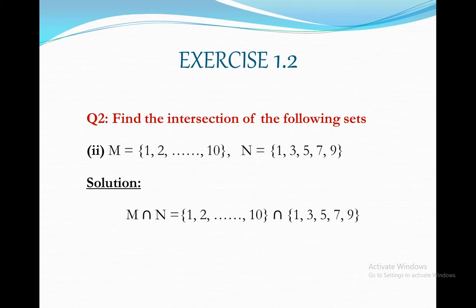M ∩ N gives {1, 2, ..., 10} ∩ {1, 3, 5, 7, 9}. It is clear that all the elements of set N are available in set M. So our answer will be M ∩ N = {1, 3, 5, 7, 9}. We may write that it equals N. Hope it is easy for all of you.